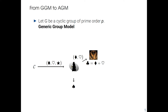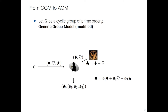the oracle can deduce how the adversary computes the output group element from the input group elements. For this reason, if we change the model slightly by forcing the adversary to output a scalar representation of the output group element — meaning we force the adversary to explain how he computes this group element from the input elements — it does not change the model. It is equivalent to the generic group model.